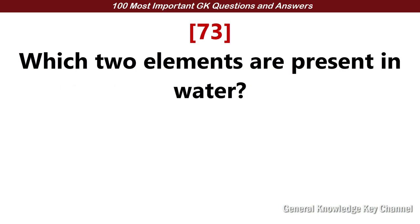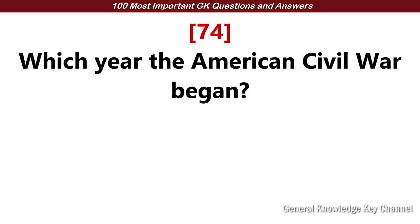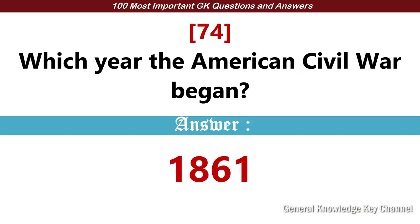Which two elements are present in water? Answer: Hydrogen and Oxygen. Which year did the American Civil War begin? Answer: 1861.